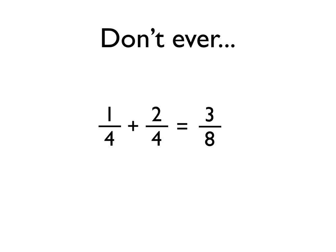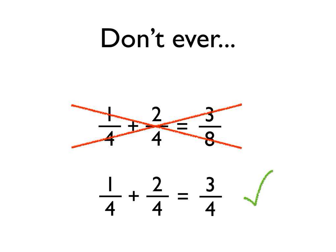Don't ever fall for this trap. Some people, when they're adding fractions, think that you just add the numerators — so in this case, 1 add 2 is 3 — and then you add the denominators, so 4 add 4 is 8. A quarter add 2 quarters is not 3 eighths. That's totally incorrect.